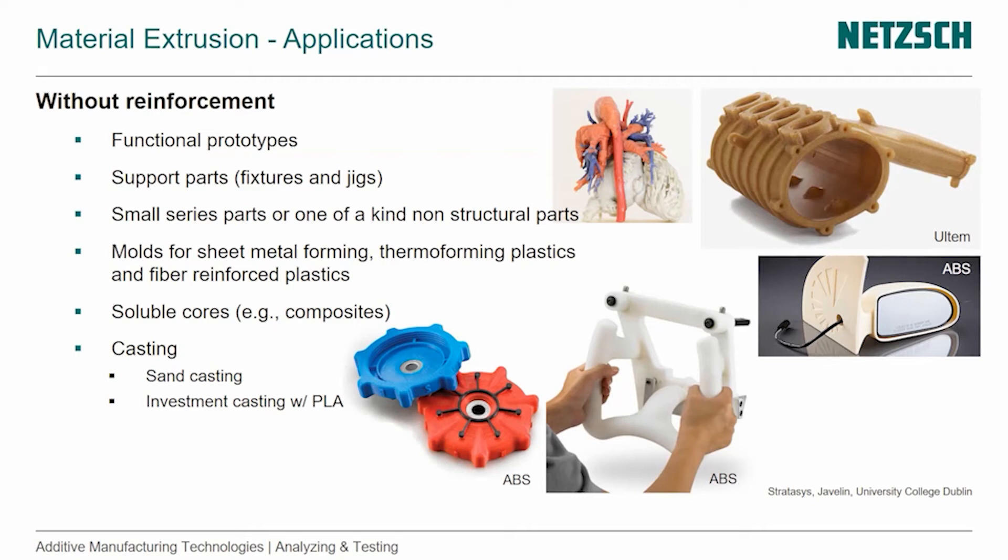There has been development to use reinforcement in molds, but if you don't need it, why put it in? You can also use material extrusion for soluble cores — printing with soluble material to produce hollow structures, for example in a composite part — and for casting. For sand casting, you print the positive of the part, embed it in sand, remove it to get the negative sand mold. Or you could print the positive in PLA, place it in the sand mold without removing it, and as liquid metal is poured in, it melts and vaporizes the PLA, creating the cavity.